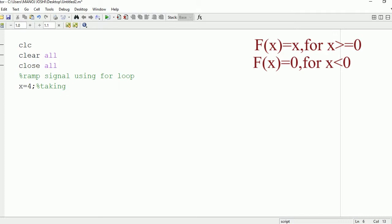Here I am taking an example. In this example I am taking the limit as 4, so x equals 4. This is basically the limit up to which we want to plot our ramp signal.